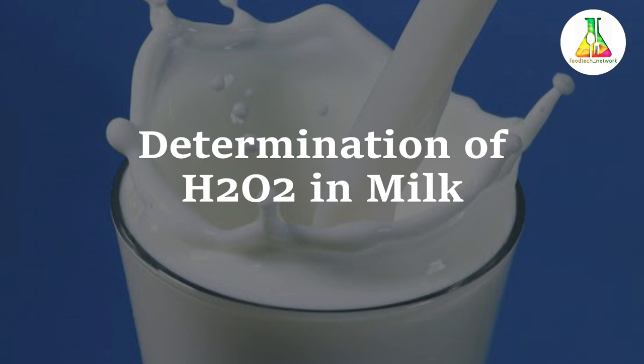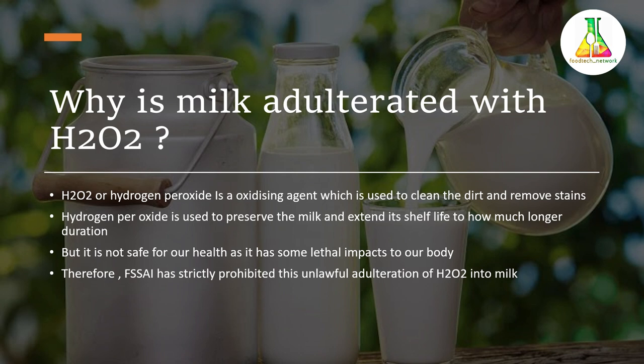We all know that milk is one of the most costly and complete foods available in the market. It contains all the important attributes a complete food should have — carbohydrate in the form of lactose, proteins including casein, lactalbumin, and lactoglobulin, fat composed of around 64 different kinds of fatty acids, as well as vitamins, minerals, and water.